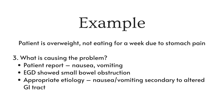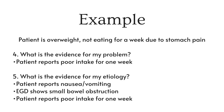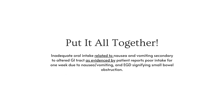Now we need to figure out the etiology — what is causing inadequate oral intake. From the patient report, they had nausea and vomiting, and an EGD showed a small bowel obstruction, indicating an altered GI tract. So the appropriate etiology is nausea and vomiting secondary to altered GI tract. For signs and symptoms, we have the patient report of poor intake for one week, nausea and vomiting, and the EGD showing a small bowel obstruction. Putting it all together: inadequate oral intake related to nausea and vomiting secondary to altered GI tract, as evidenced by patient reports poor intake for one week due to nausea, vomiting, and EGD signifying small bowel obstruction.